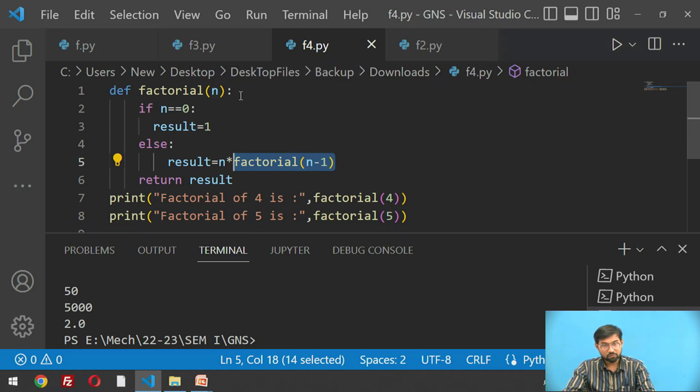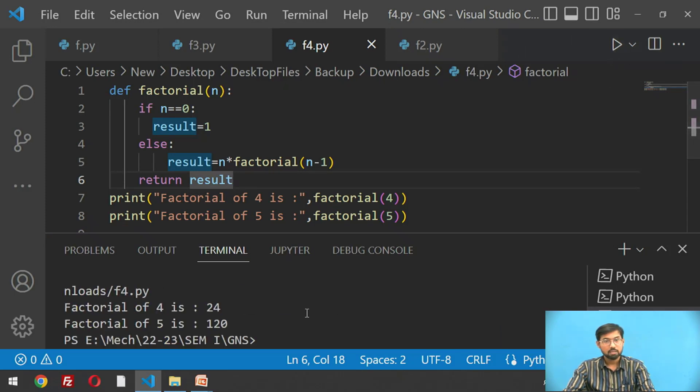Again the same function we are recalling in the if-else statement and returning the result. Here we are printing factorial of 4 and 5. Let's run this program. Factorial of 4 is 24 and factorial of 5 is 125. Hope you understand the recursive function very well.